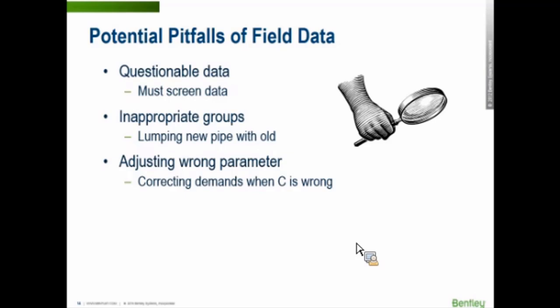Because you can tell Darwin Calibrator change demands and C at the same time. At that point, it's going to actually go in and do that. But do you want it to? Are you more or less confident of one set versus the other? In the end, use your common sense. Does a C factor, if Darwin Calibrator says so, does a C factor of 30 for a PVC pipe that was put in the last 40 years? Does that really, really make sense? Probably not. So you might be an example of changing the wrong parameter where demand may have been the thing that was off.